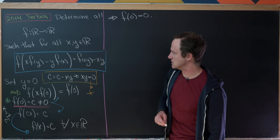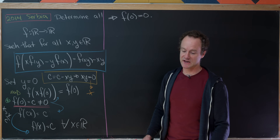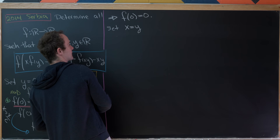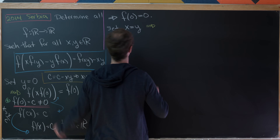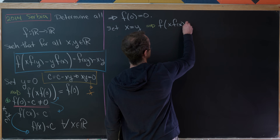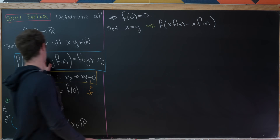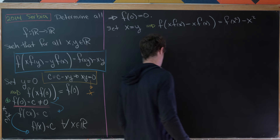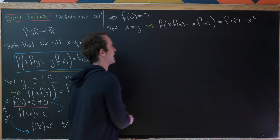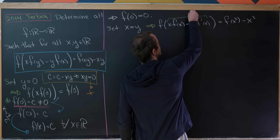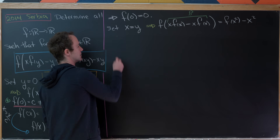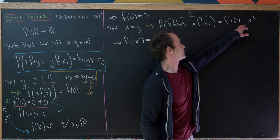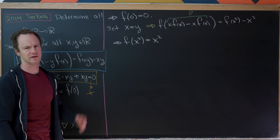The next standard thing to do is to set x equal to y in our functional equation. On the left-hand side we get f(x)·f(x) − x·f(x), and on the right-hand side f(x²) − x². Notice the argument of the left-hand side factors to f(x)·(f(x) − x), and since we showed f(0) = 0, this gives us f(x²) = x².